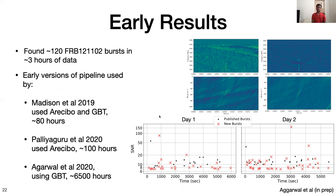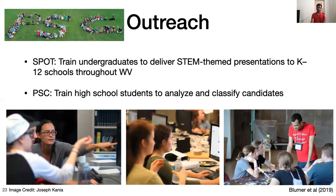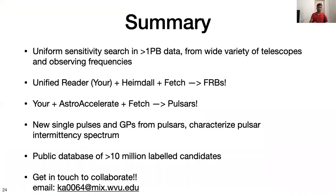Early versions of the pipeline have also been used by different authors. TPP would also have an outreach component wherein we will train undergrads and high school students as part of the SPOT and Pulsar Search Collaborative program to analyze and classify candidates and deliver STEM presentations throughout schools in West Virginia. In summary, TPP aims at performing a uniform sensitivity search across more than a petabyte of data with a wide variety of telescopes and observing frequencies. We jokingly call our pipeline 'YOUR Heimdall FETCH-es FRBs' and now, by replacing Heimdall with AstroAccelerate, we can find pulsars too. Everything will be made public — a public database of more than 10 million candidates — and we are actively looking for collaborations, so get in touch if you'd like your data processed for pulsars or FRBs.